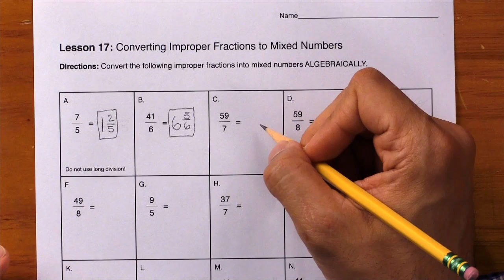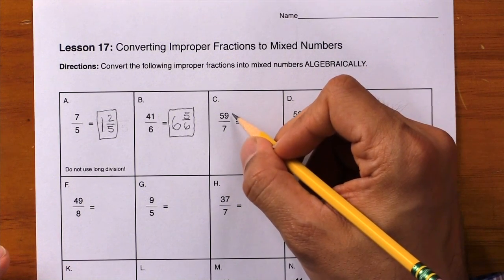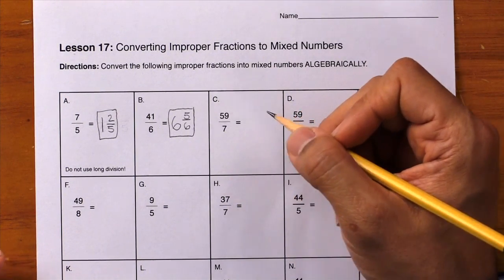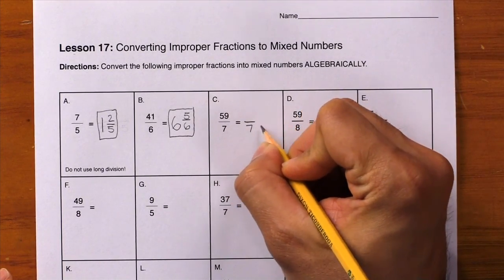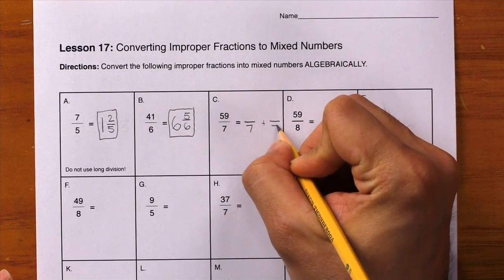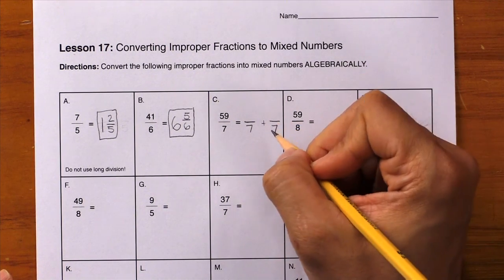If students aren't quite ready to make that jump yet, that's okay, because with all the practice they're getting they'll get there. Let's take a look at box C and we'll do this one by writing it out. Here we have 59 sevenths, so we're going to break it up. We'll write blank over 7 plus blank over 7. This makes sense because sevenths plus sevenths give you sevenths.